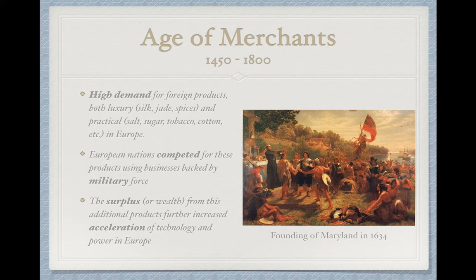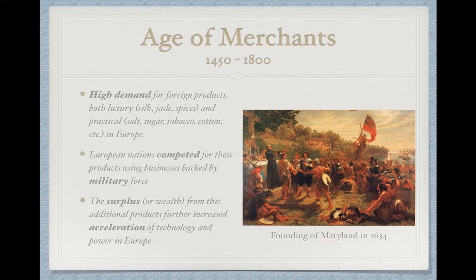After this age of exploration, you had a new age where merchants controlled much of the world—merchants actually had military power and were able to control much of the world. With the discovery of all these new places, you had discovery of new products and goods to trade: luxury goods like silk, jade, and spices from Asia, and more practical goods like salt, sugar, tobacco, cotton, and tea. There was really high demand for products that couldn't be found in Europe, and European nations competed for these products.